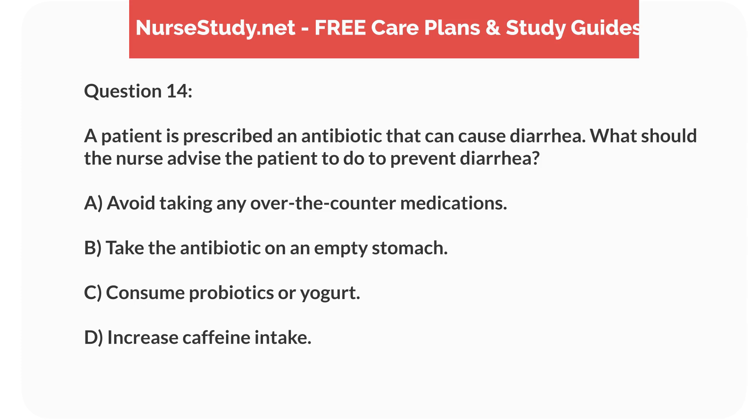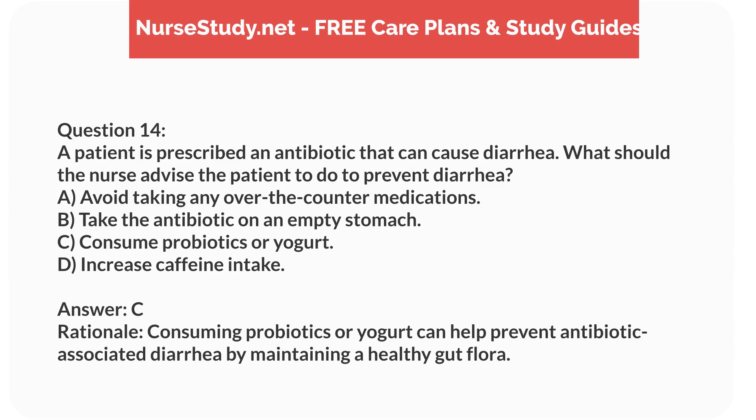Question 14. A patient is prescribed an antibiotic that can cause diarrhea. What should the nurse advise the patient to do to prevent diarrhea? A. Avoid taking any over-the-counter medications. B. Take the antibiotic on an empty stomach. C. Consume probiotics or yogurt. D. Increase caffeine intake. Answer: C. Rationale: Consuming probiotics or yogurt can help prevent antibiotic-associated diarrhea by maintaining a healthy gut flora.